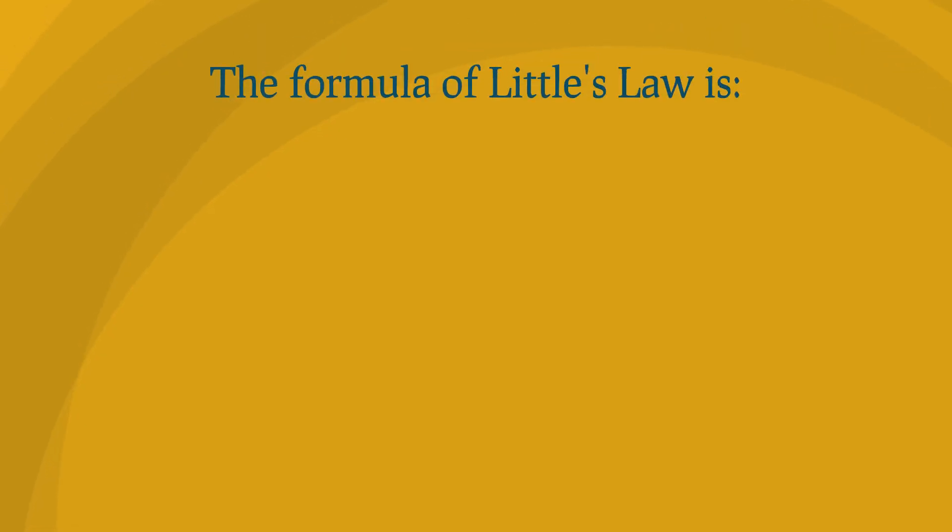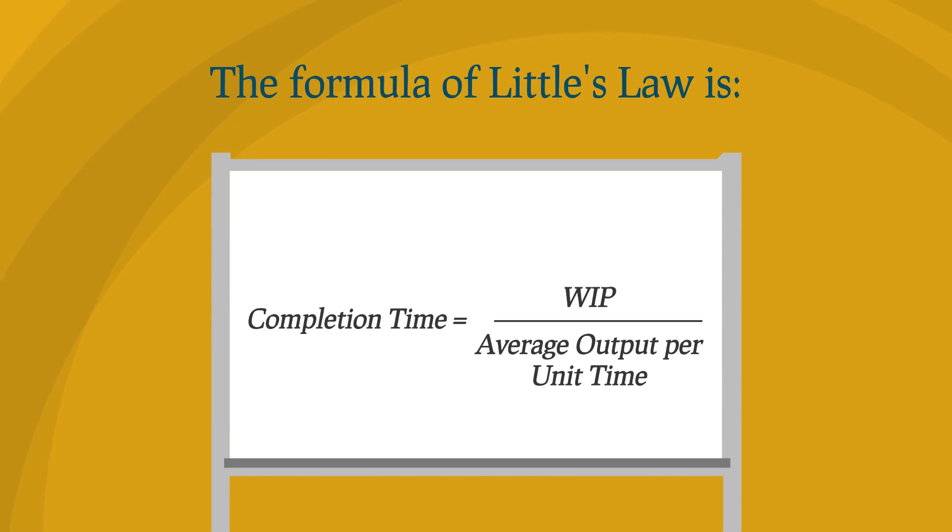The formula for Little's Law is: Completion time equals work in progress divided by average output per unit of time. Average lead time equals work in progress divided by completion rate.